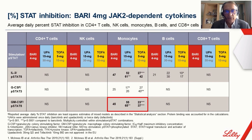Moving to JAK-2 dependent cytokines, the percentage of STAT inhibition for IL-3 and GM-CSF driven by JAK-2/2 was generally highest for upadacitinib and less so for baricitinib and tofacitinib. The percentage of STAT inhibition for G-CSF and STAT-3, driven by JAK-2/TYK-2, was highest for tofacitinib and less for upadacitinib and baricitinib.